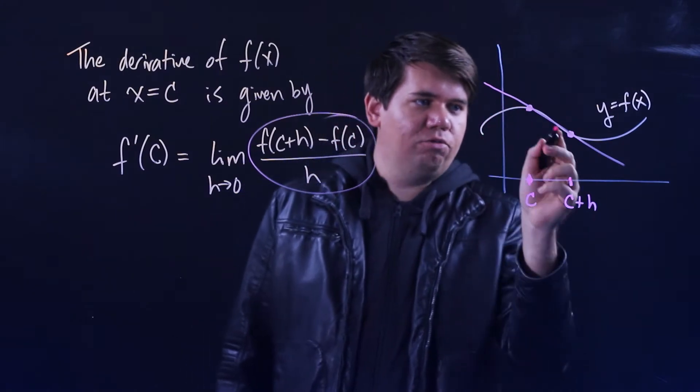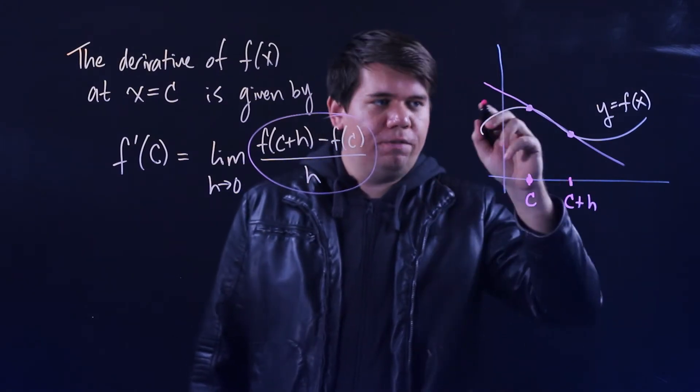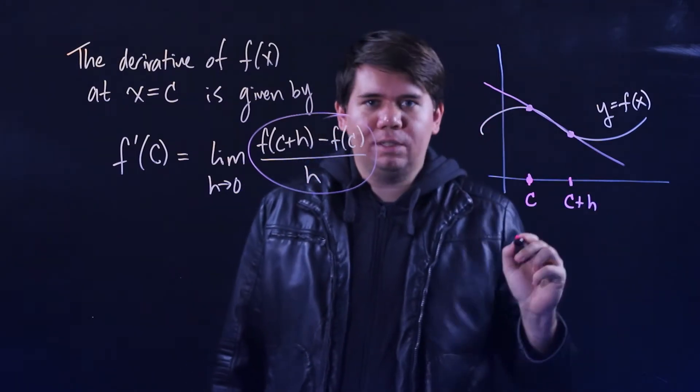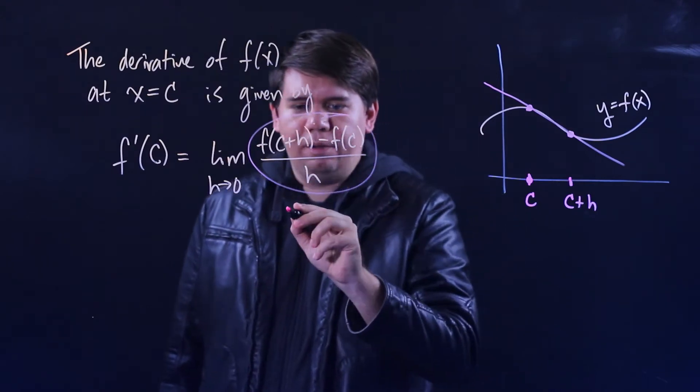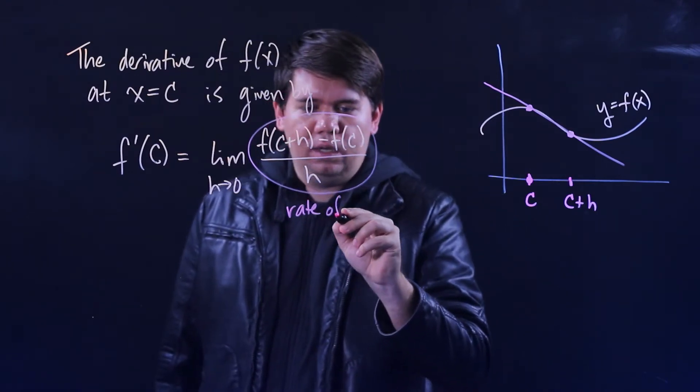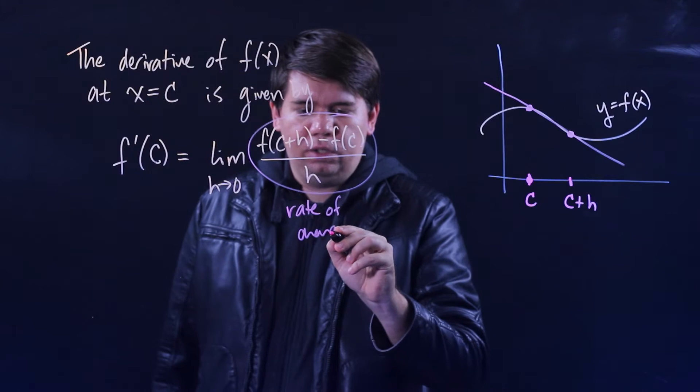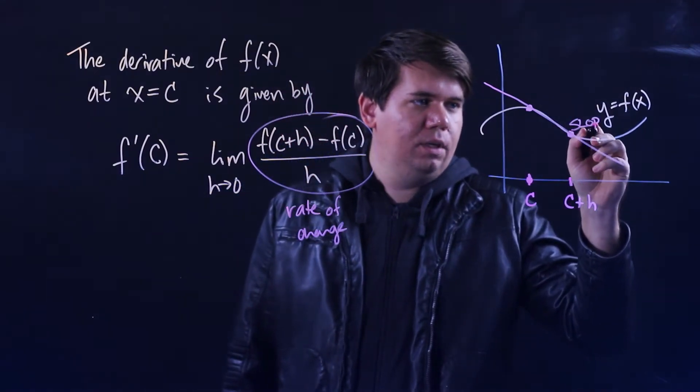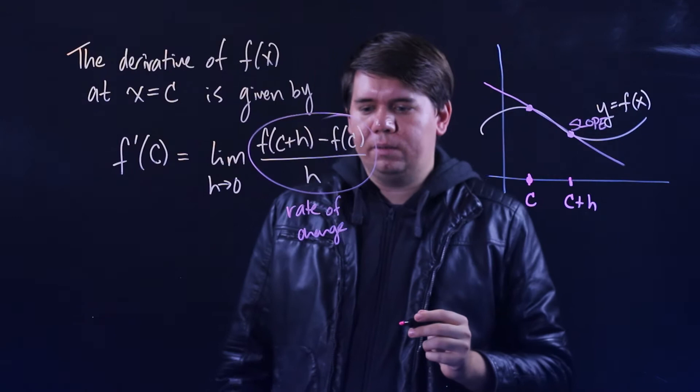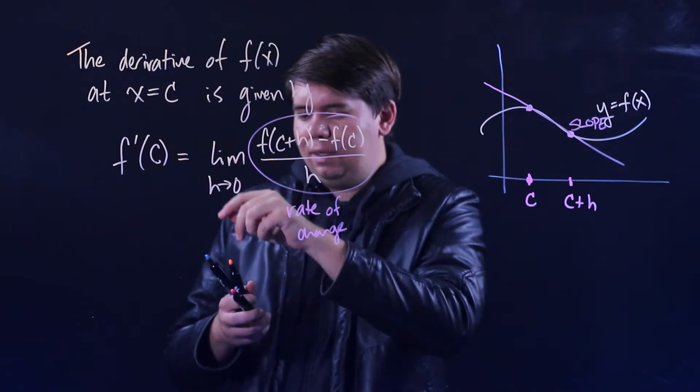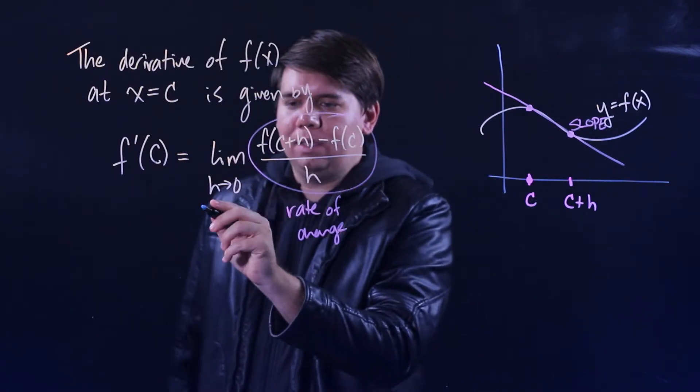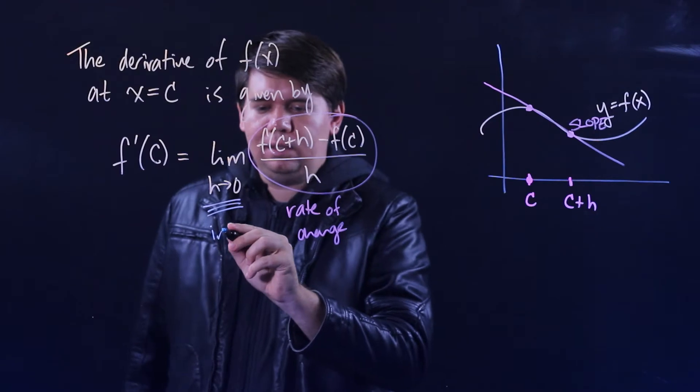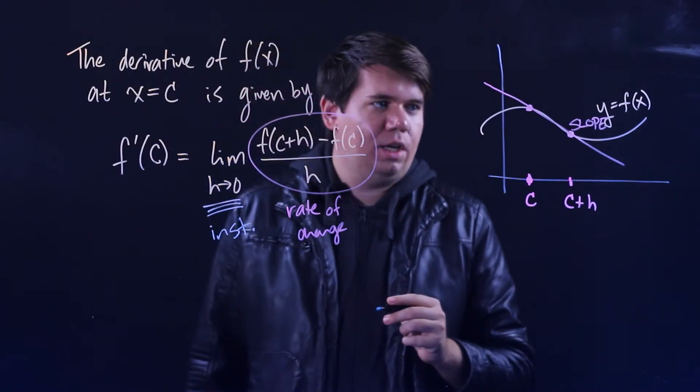If you draw the line through those points, you get this secant line. Here we have the slope of that secant line, so it's giving you the rate of change of the function from c to c plus h. This right here is giving me a rate of change which corresponds to the slope of the secant line.